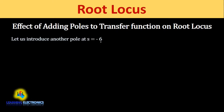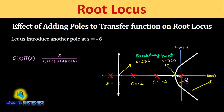Now let us introduce another pole at S = -6. The transfer function becomes G(S)·H(S) = K / [S(S+2)(S+4)(S+6)]. We now get two breakaway points: one at S = -5.236 and another at S = -0.764. The root locus branches from S=0 and S=-2 approach the breakaway point at S=-0.764, then divide and move towards the right half of the S plane, decreasing system stability.